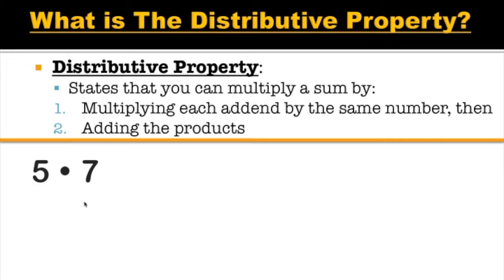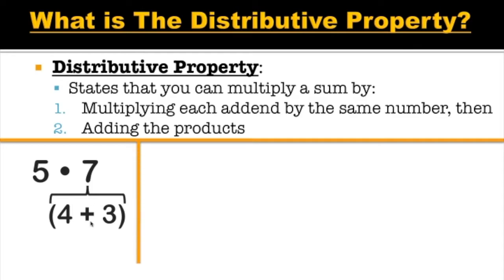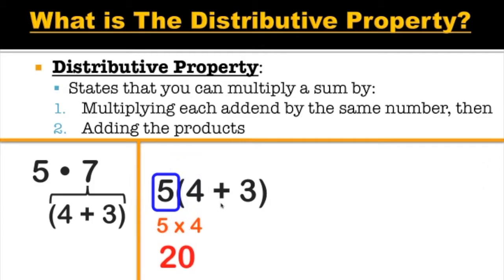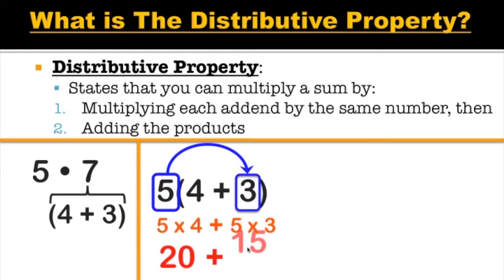So let's take an example. Let's say we have five times seven. We'll break down our seven into four plus three. We could break that number down any way we want — we could have made it five and two, or six and one — it doesn't really matter as long as it adds up to seven. So we're going to use the distributive property, and instead of multiplying five times seven, we're going to multiply five times the quantity four plus three. We're distributing the five to each number inside parentheses, starting with the four — so this gives us five times four, and five times four is twenty.